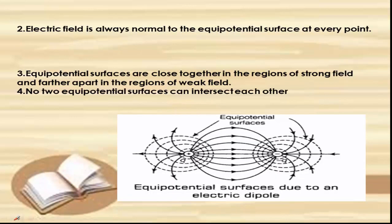The next property: the electric field is always normal to the equipotential surface at every point. If the field were not normal to the equipotential surface, it would have a non-zero component along that surface, which would require work to be done. But since there is no potential difference between any two points on the equipotential surface, no work is required, so the electric field must be normal to the equipotential surface at every point. This is the second property.